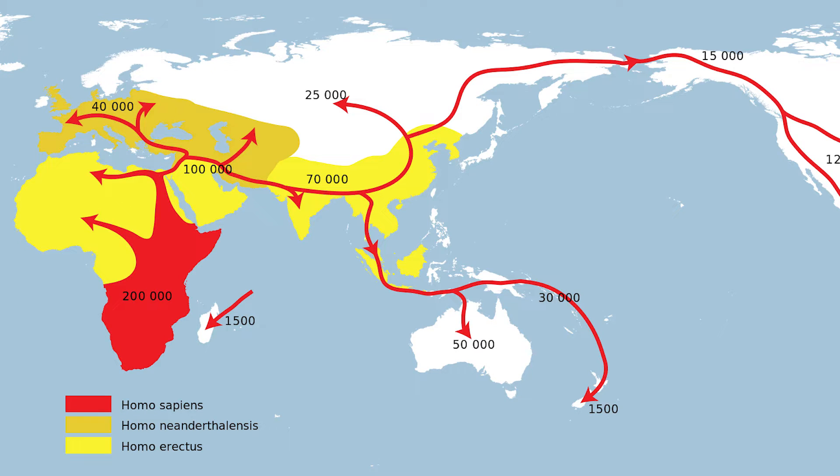For instance, one of the things that we have been able to discover by studying the genetics of humans across the planet is that humans descended from Africa, that we are an African species.